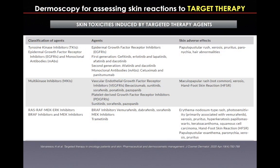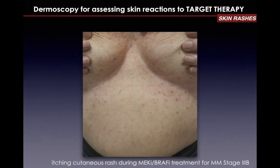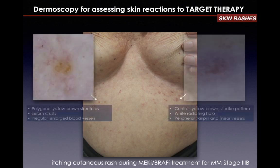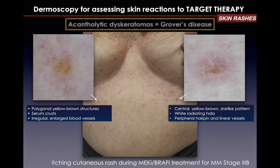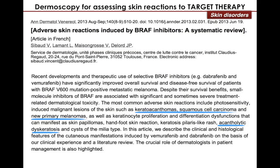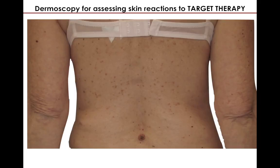Cutaneous side effects are very common in oncology patients who receive targeted therapy. Here we have an itching skin rash during MEK and BRAF inhibitor therapy for advanced melanoma, showing dermoscopically polygonal yellowish bran-like structures, linear vessels, and a whitish halo — common dermoscopic findings in Grover's disease. Under BRAF inhibitors, keratinocyte proliferation and differentiation expansions are extremely common, as well as dermoscopic changes in nevi.